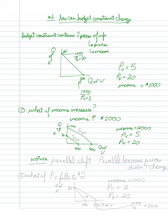Notice here it is a parallel shift. It's parallel because the prices didn't change—nothing about the prices changed. The price ratio is still 5 over 20.